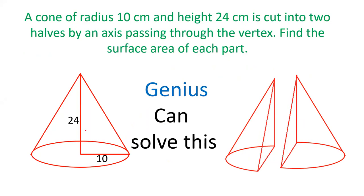This video shows a cone which has a radius 10 cm and height 24 cm. And this cone is cut into two parts from the vertex till the middle. You have to find out the surface area of both the parts. Let's see how we can solve this question.